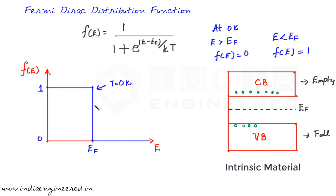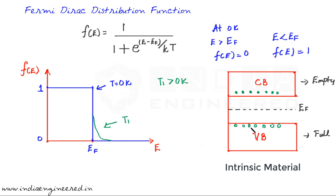For temperatures greater than zero Kelvin, there should be some probability of finding an electron above EF and some probability of finding holes below EF — that is, vacant states. At temperature T1 greater than zero Kelvin, there is a small probability of finding an electron above EF. Similarly, the probability in the valence band is reduced — it can no longer be one. An important point is that the Fermi-Dirac distribution is symmetrical around EF.